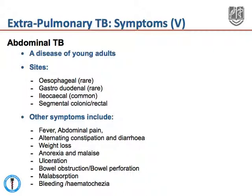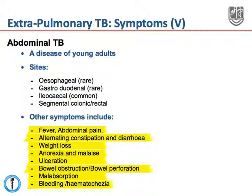The symptoms of tuberculosis in the gastrointestinal tract are many, and include fever and abdominal pain. There may be alternating constipation and diarrhea, weight loss, anorexia, and malaise. There may be ulceration in the upper or lower GI tract. When advanced, there may be bowel obstruction and bowel perforation. There may be classical symptoms of malabsorption, and both upper and lower GI bleeding may occur.